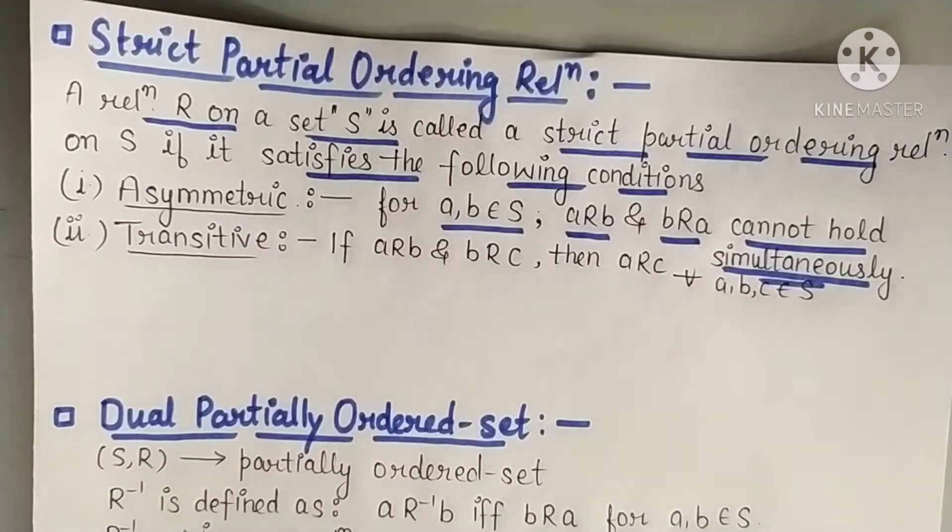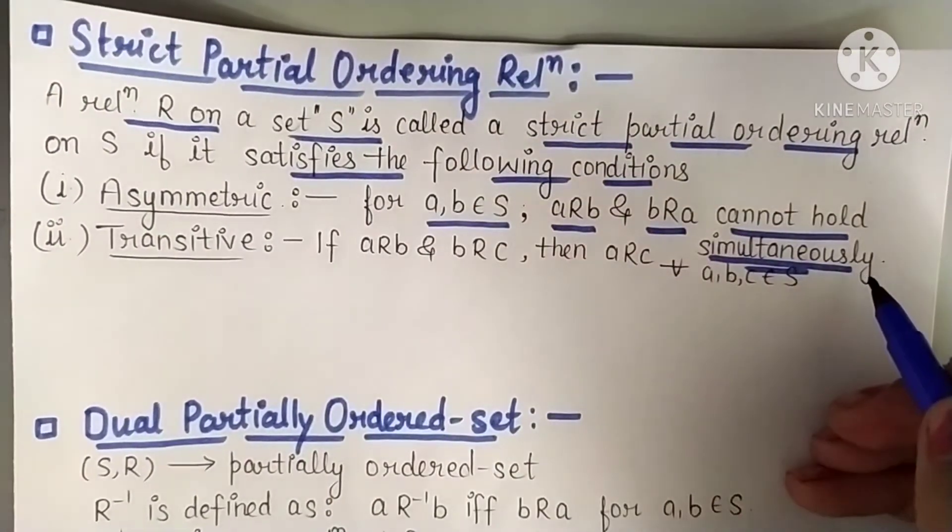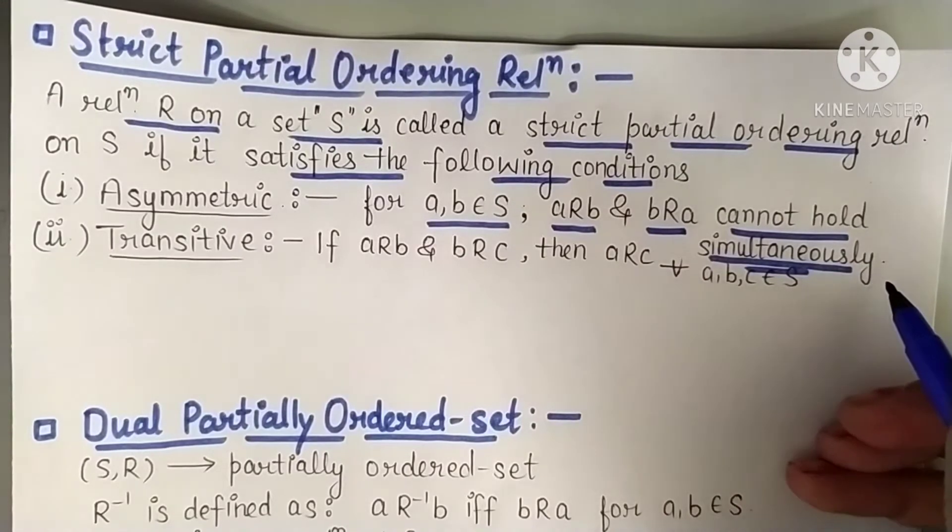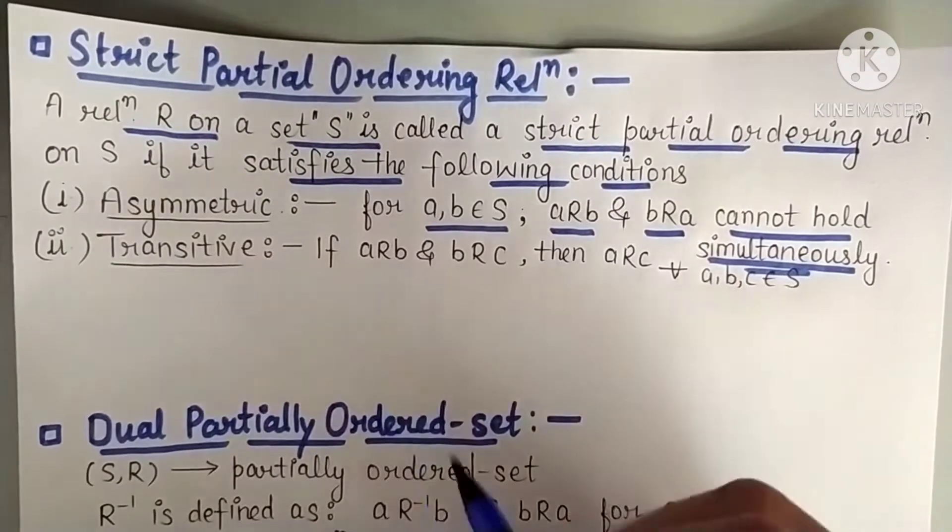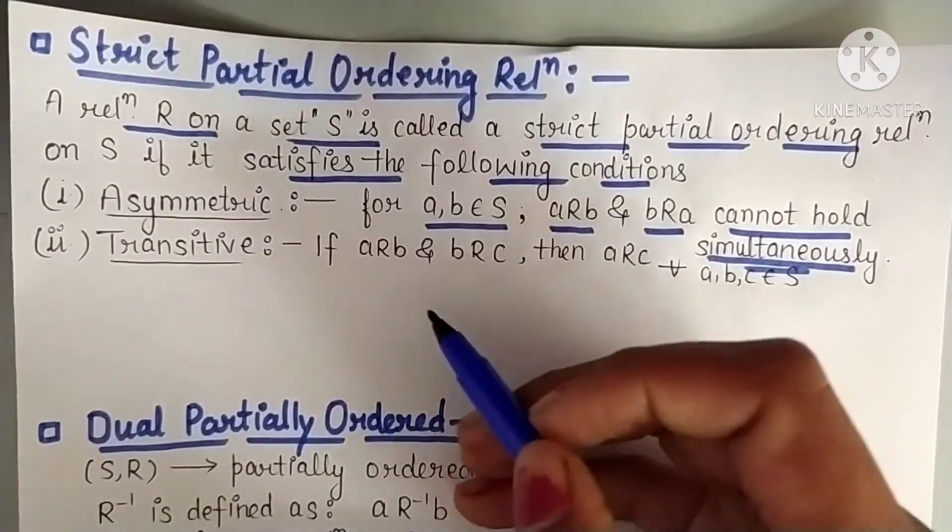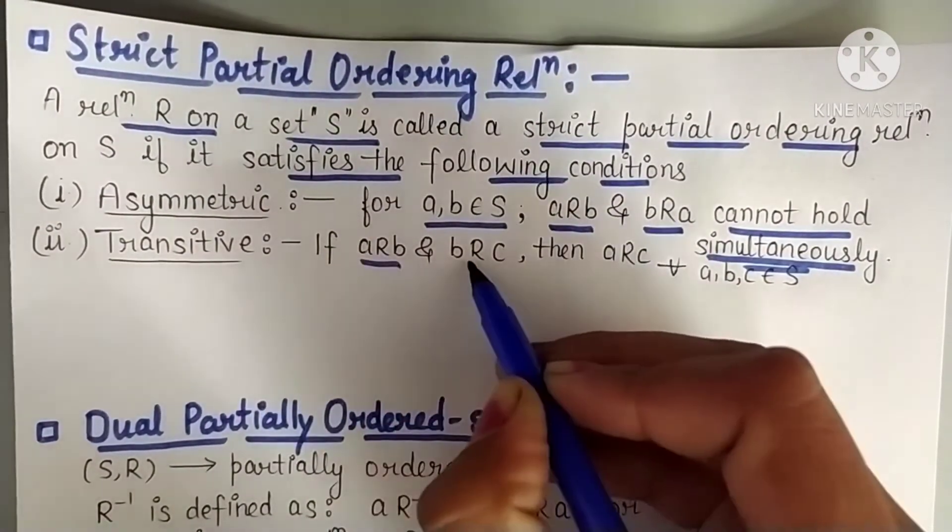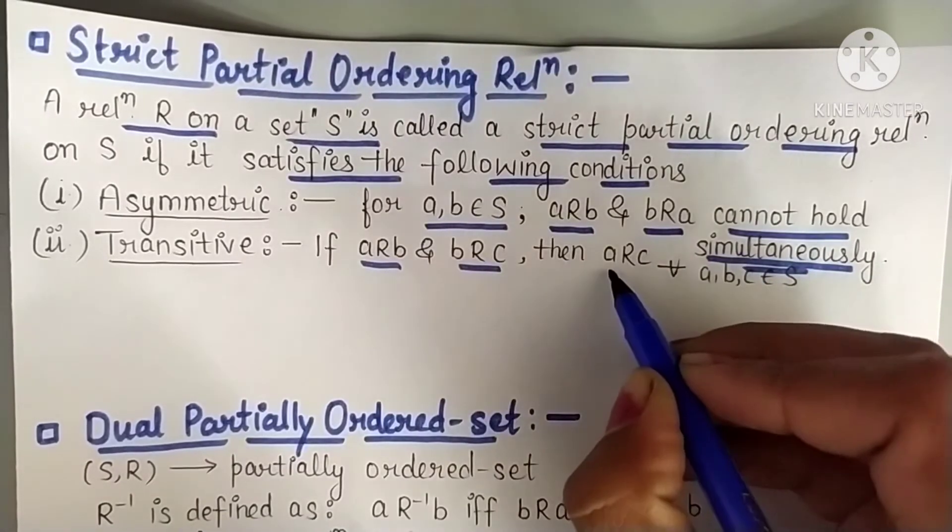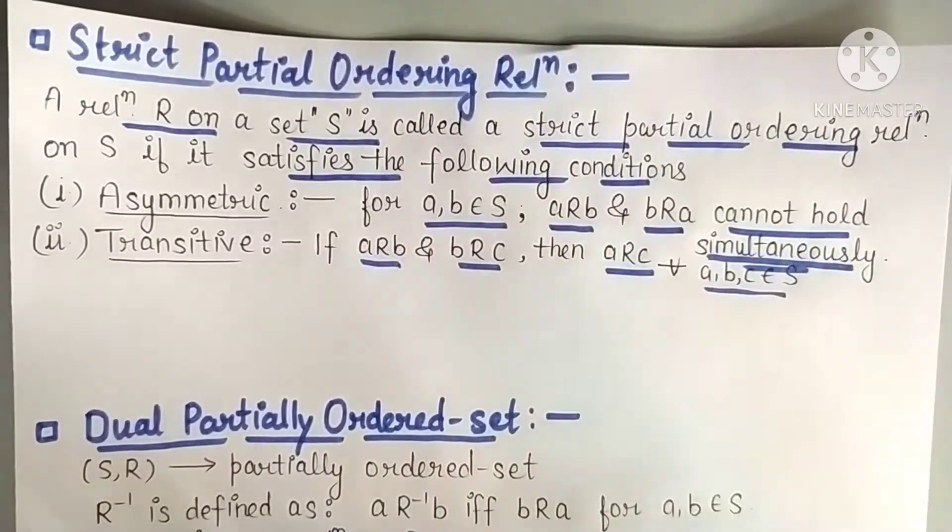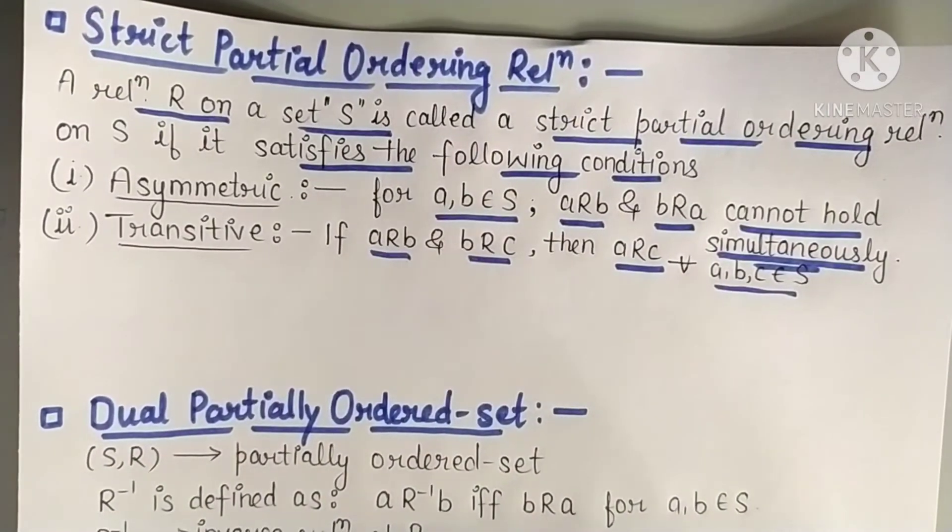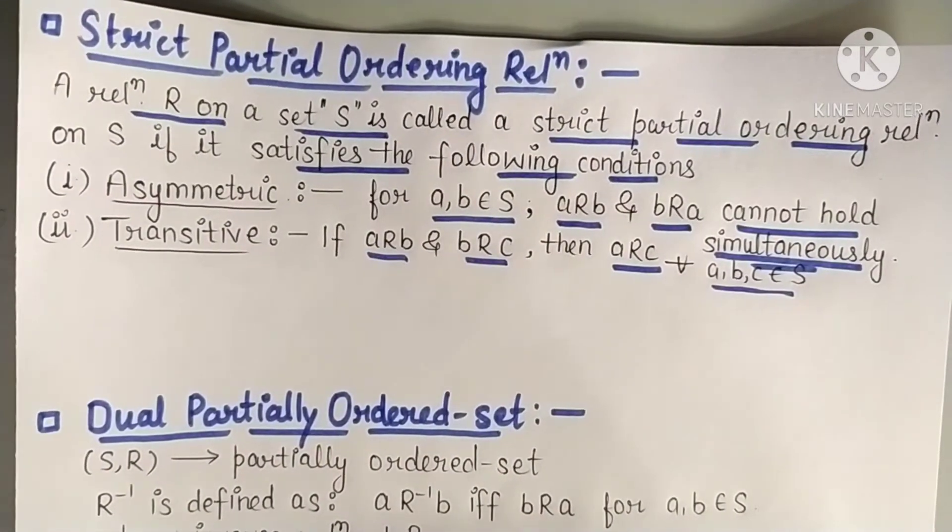When a related to b and b related to a cannot be together simultaneously, then we say that relation is asymmetric and transitive. Transitive we have read before - if a is related to b and b is related to c, then a should be related to c for all a, b, c belonging to S. Let me give you an example of asymmetric and symmetric.